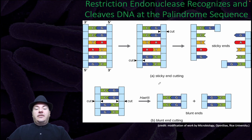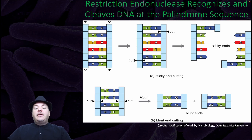Some endonucleases do not leave sticky ends — they result in blunt end cutting. For example, this endonuclease recognizes GGCC and cuts between the G and the C on both strands, leaving blunt ends, not sticky ends.